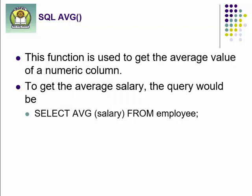The next function is the AVERAGE function. Average means the sum of total divided by the number of observations. To get the average salary, you write: SELECT AVG(salary) FROM employee. Note that you don't write the complete word 'average' — you write AVG. This will return the average salary of the employees.